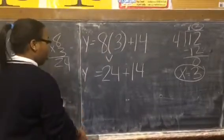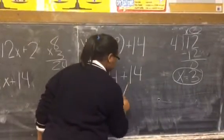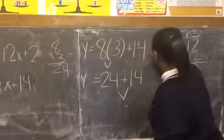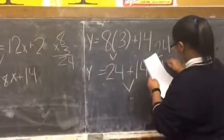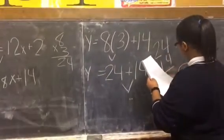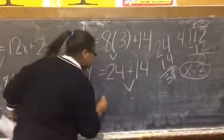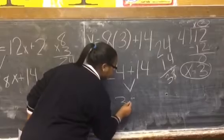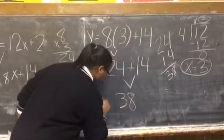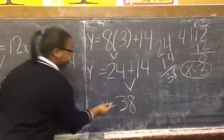So now, what's 24 plus 14, class? 30. Okay, I'm going to show you. It would be 38. So, 38. Y equals 38. So, this is the y.